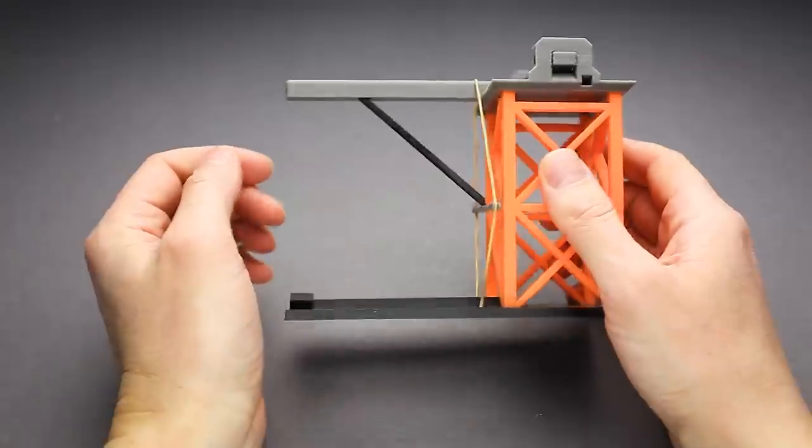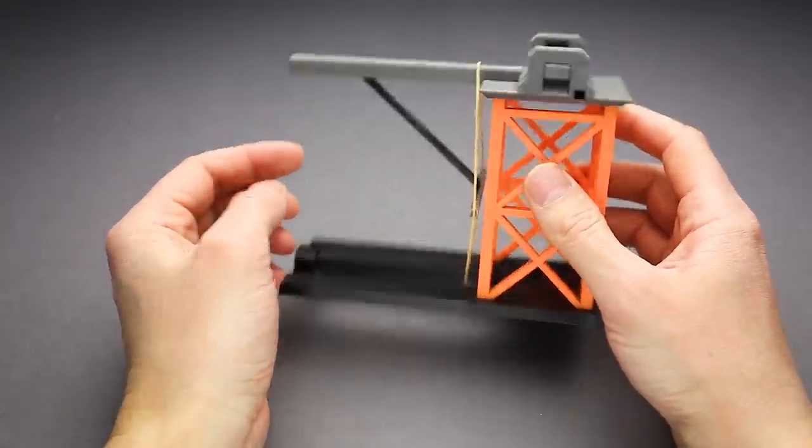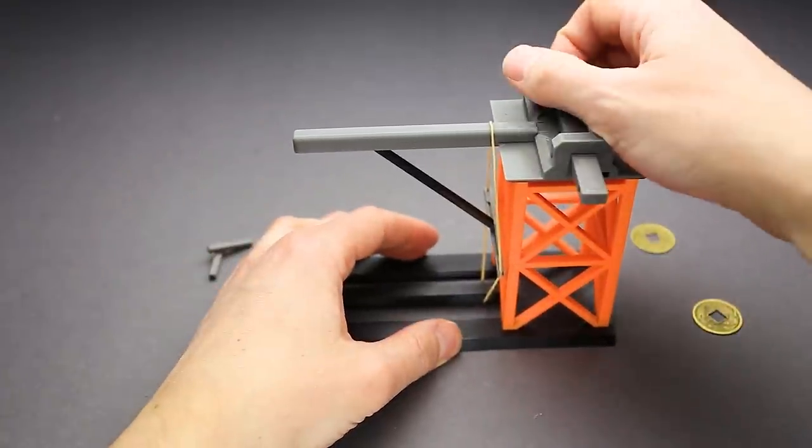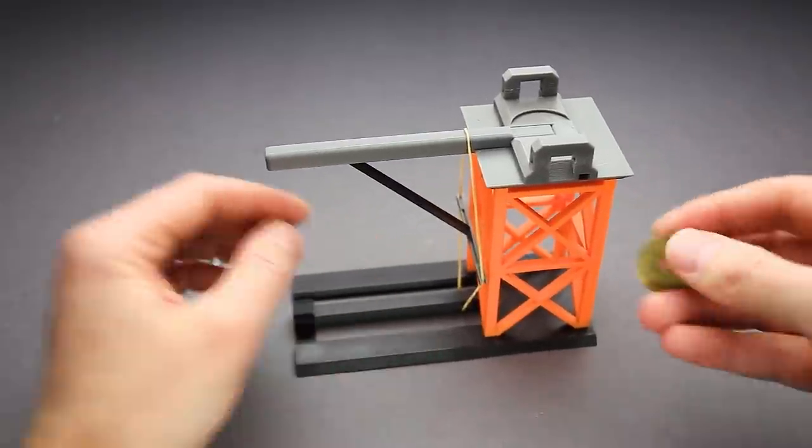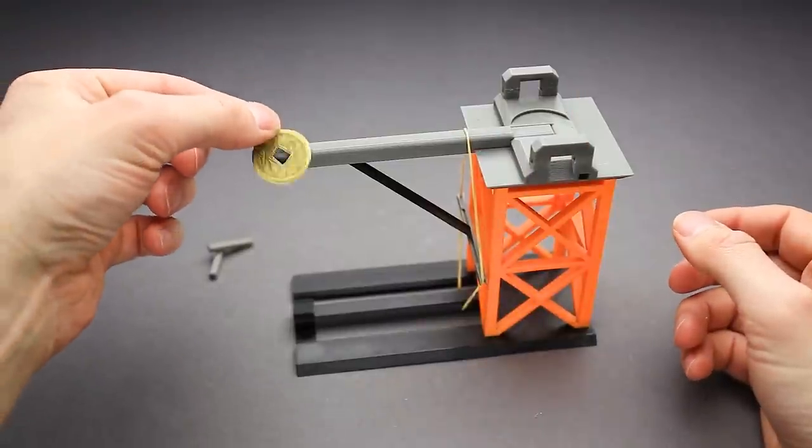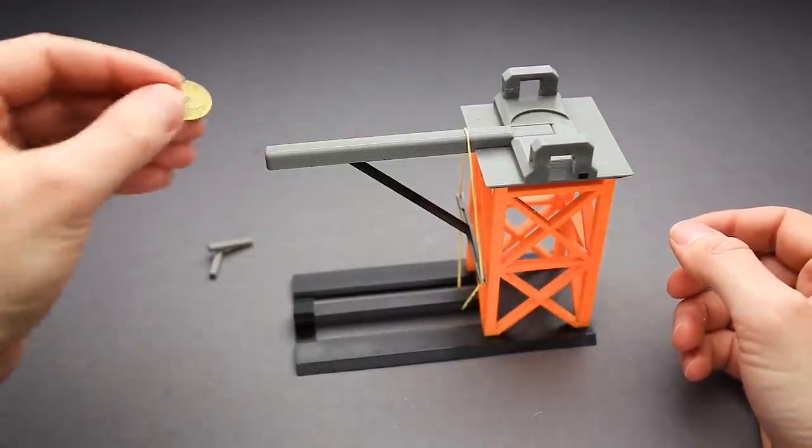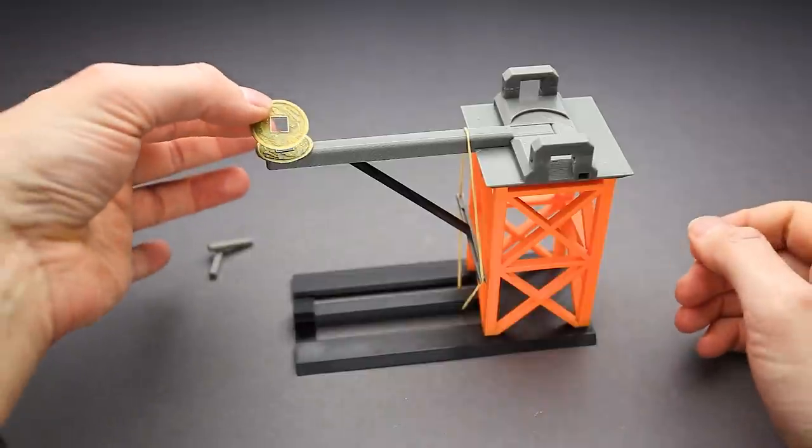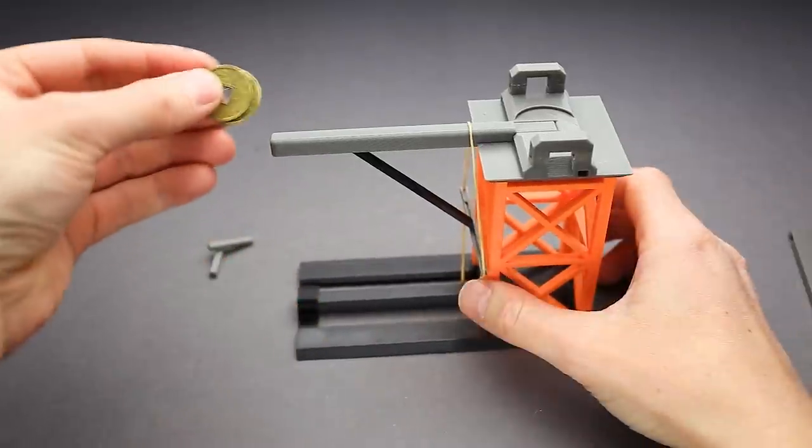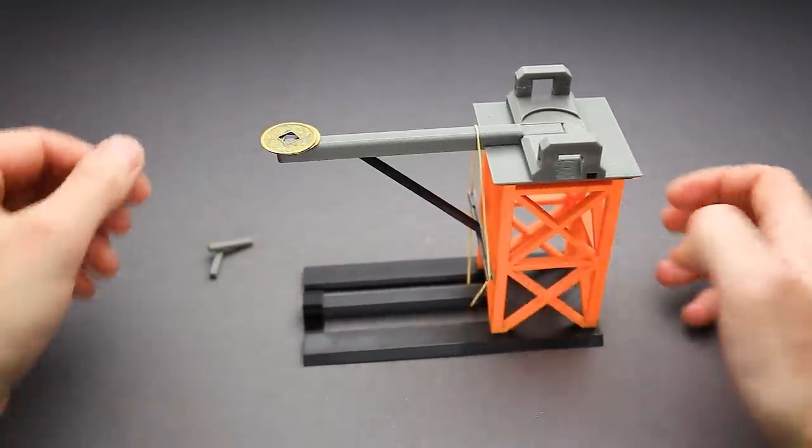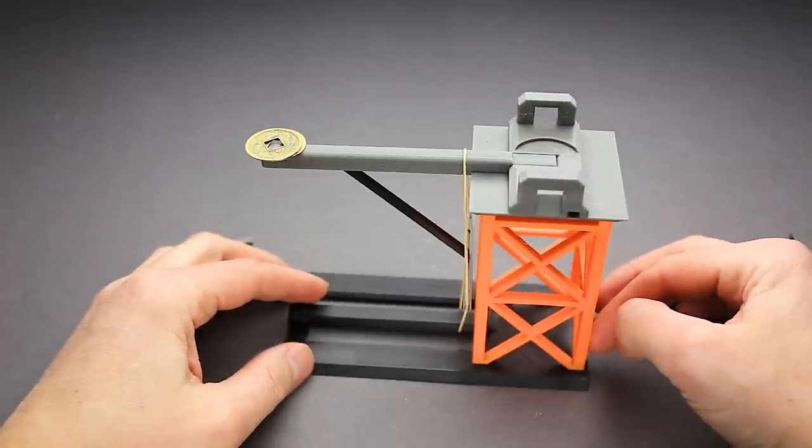Now it is held pretty well. It is parallel to the ground. I can even unlock it. And now I can put the coins on top. Yeah, the most difficult part is to put coins on top of the arm. And the puzzle is solved.